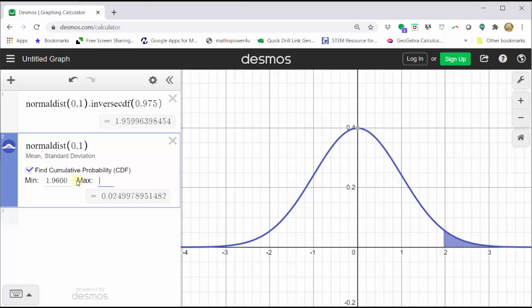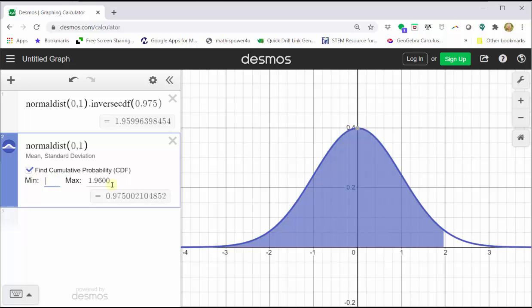Let's also check the area to the left by changing the maximum to 1.9600 and clearing the minimum so that it goes back to negative infinity.